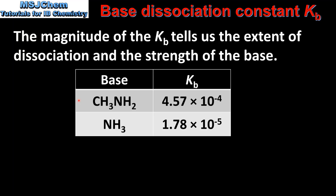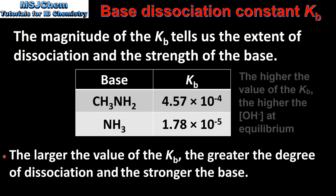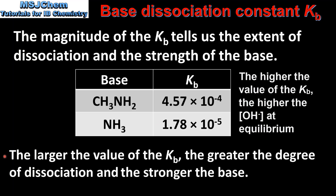In this table we have two bases: methanamine and ammonia. The Kb of methanamine is 4.57 × 10⁻⁴, and the Kb of ammonia is 1.78 × 10⁻⁵. The larger the value of the Kb, the greater the degree of dissociation and the stronger the base. Of these two bases, methanamine has the highest Kb value and is therefore the strongest base.